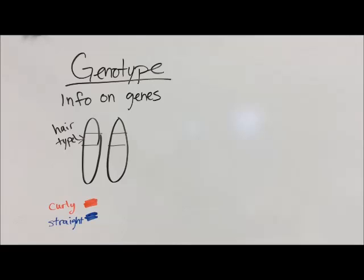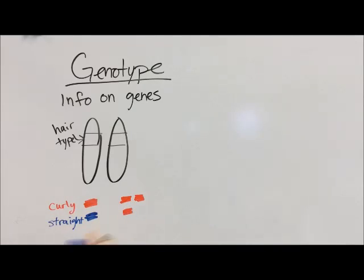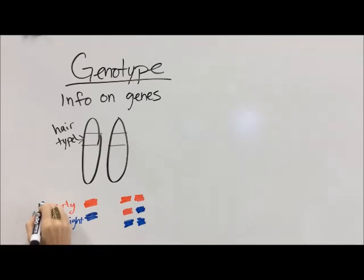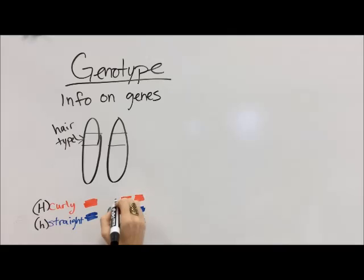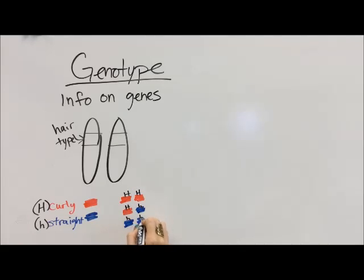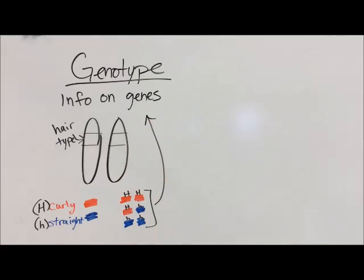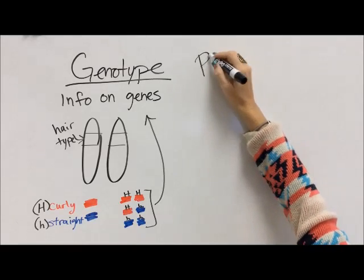If we have two different alleles, that means that we can have three different combinations: we can have two curlies, a curly and a straight, or a straight and a straight. Now, if curly is dominant and straight is recessive, then we have two dominant, dominant-recessive, or recessive-recessive. This is what's on our genes — what combination of alleles we have on our genes.